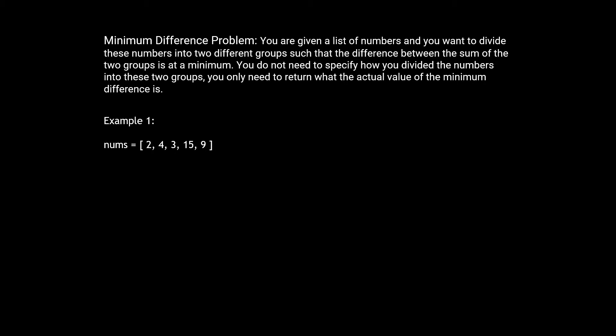Let's look at two examples. In our first example the numbers given are 2, 4, 3, 15, and 9. The minimum possible difference for this example is 1. This is because you can divide these numbers into two groups: one with 2 and 15, and the other with 4, 3, and 9. We're going to be returning the minimum difference itself, which is 1. We can think of the groups as sets rather than lists.